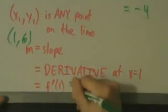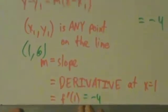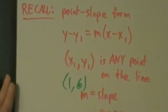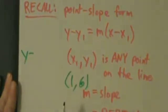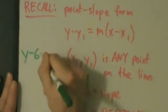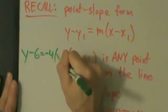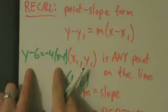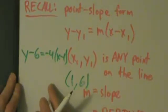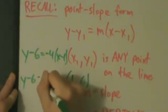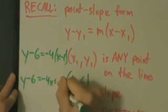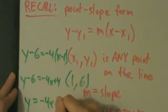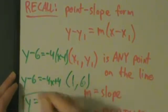f prime of 1 equals negative 4 — that's our slope m. We have our point (1, 6) and our slope, so we plug into point-slope form: y minus 6 equals negative 4 times the quantity x minus 1. Converting to slope-intercept form: y minus 6 equals negative 4x plus 4, so y equals negative 4x plus 10. That's the equation of the tangent line.